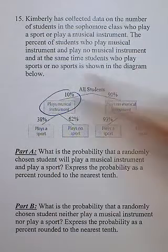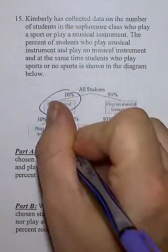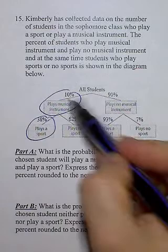Will play a musical instrument and will play a sport. It has to be in that order. So what I'm going to do is I'm going to multiply these two numbers.